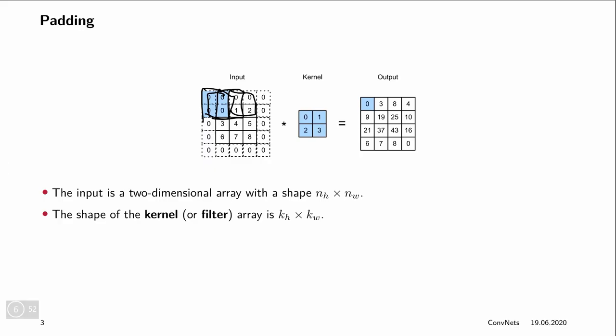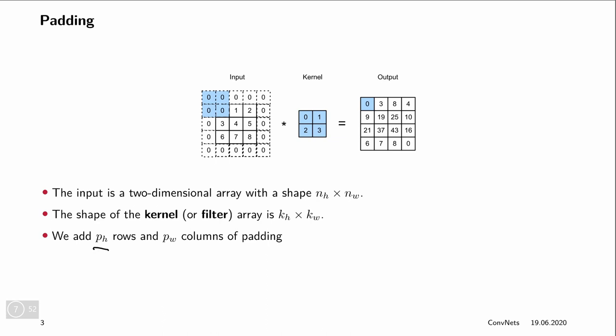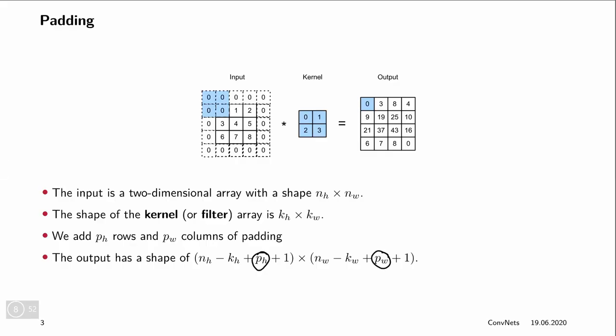And so on and so forth to compute the output. Now if again the input is a two-dimensional array of height n_h and width n_w and the kernel has a size of k_h times k_w, the kernel height and the kernel width. If we now add p_h rows and p_w columns of padding, then we produce an output that has each of the dimensions increased by p, the corresponding p_h or p_w. So the output now has a shape of n_h minus k_h plus one as before, but plus p_h times n_w minus k_w plus one as before, plus p_w.